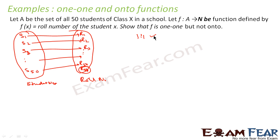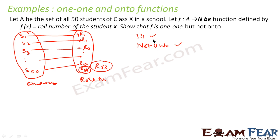The second thing is: is it onto or not? We have seen that for every roll number there is only one student, because one roll number can be assigned to only one student — so it is one-to-one. For onto, we check if there is an orphan element, because onto means surjective. If there are orphan elements it is not surjective. There are some roll numbers — for example 51, 52 — which are orphans with no student linked to them, so it is not onto.